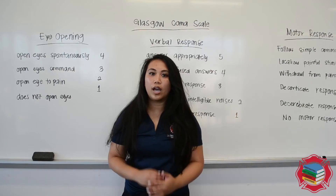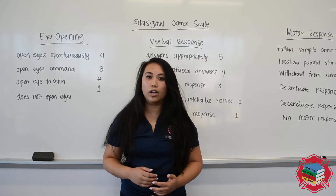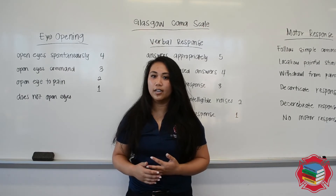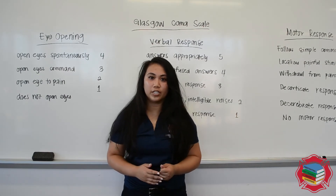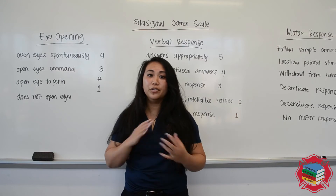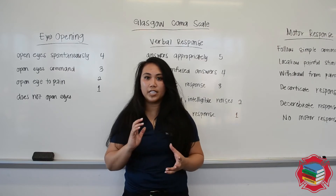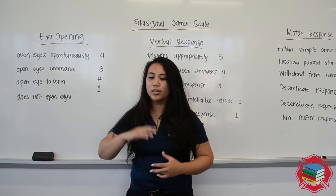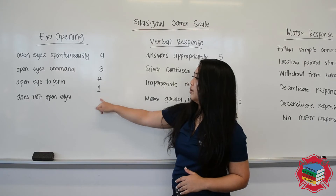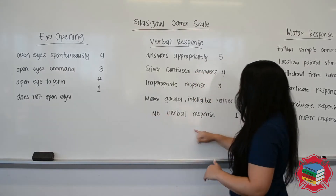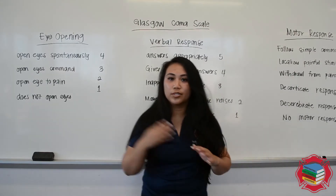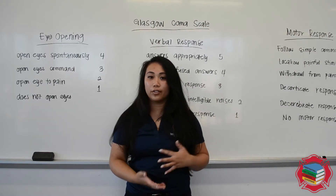The highest score your patient can get is 15, and the lowest score is a 3. So you and I would be 15, and an unresponsive patient would be a 3 — that's a 1 for eyes, 1 for verbal, and 1 for motor, which adds up to 3.